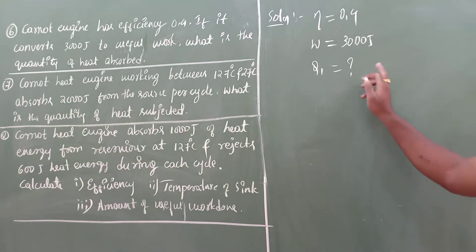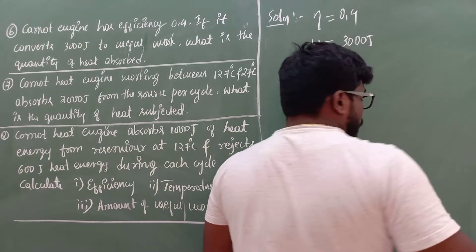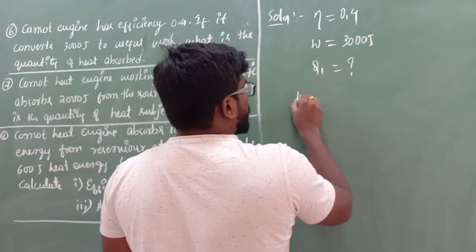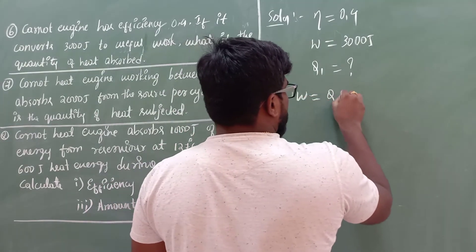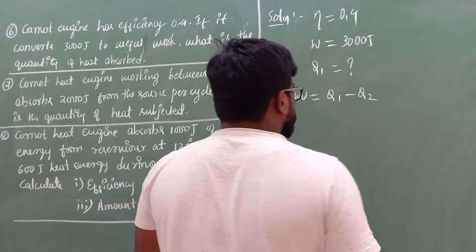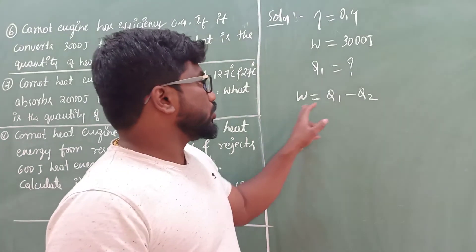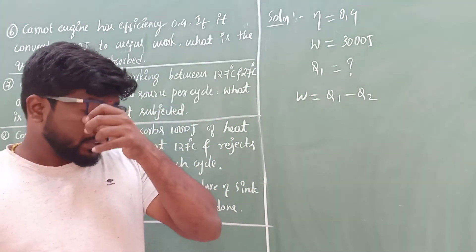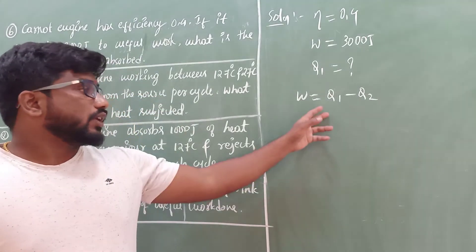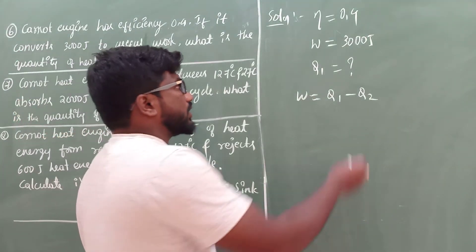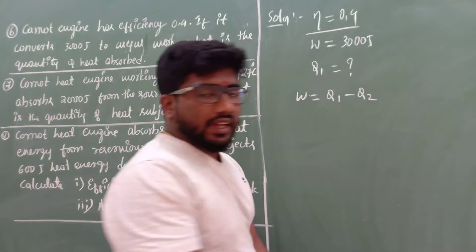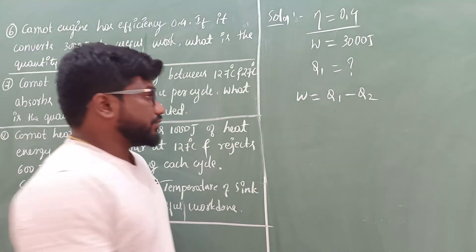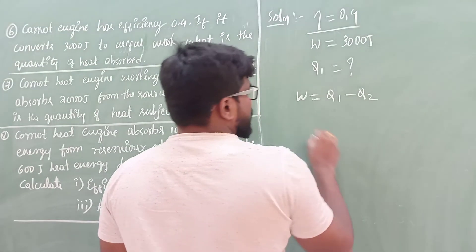To find Q1, we consider the formulas available. Work done equals Q1 minus Q2, but we don't know Q2. So we look for another approach using the given efficiency value.